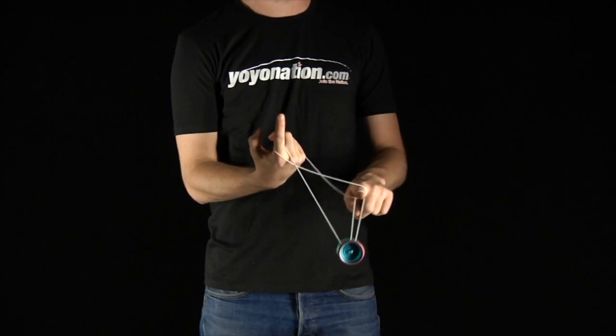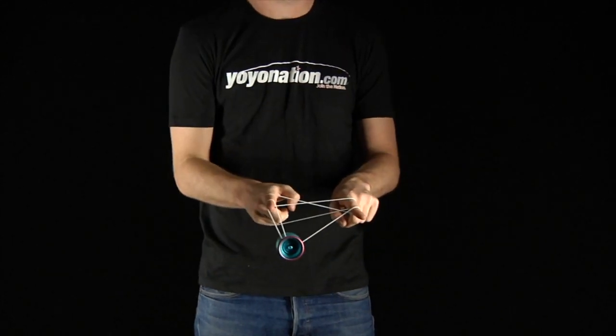You can point your fingers up on either hand to move the strings further back. This will give you more room for more hops.